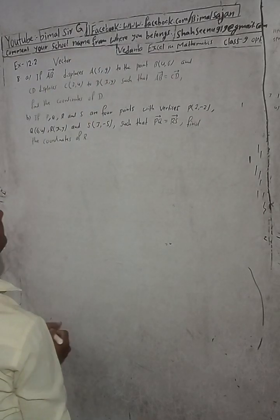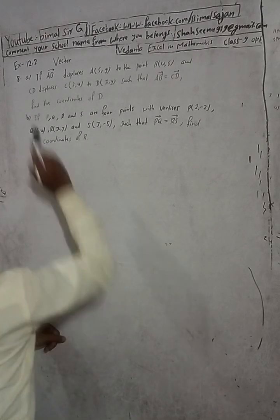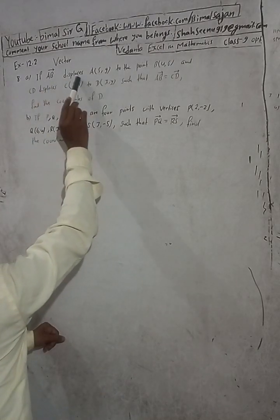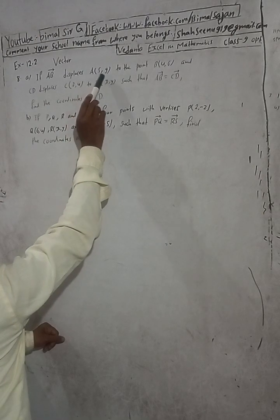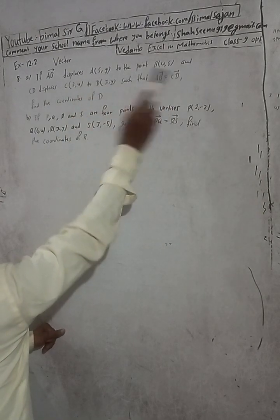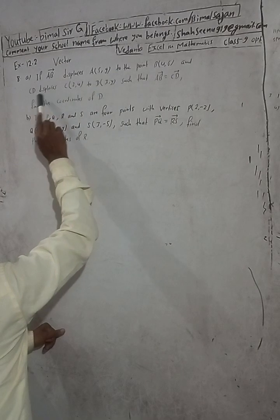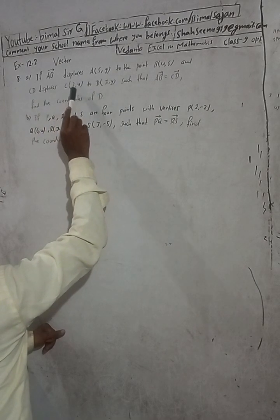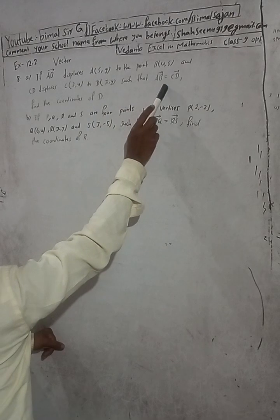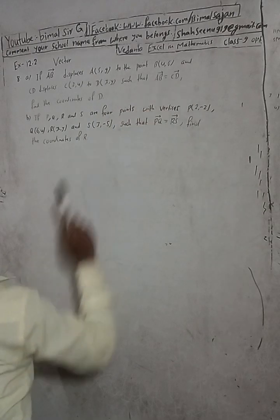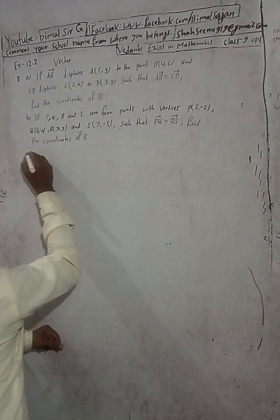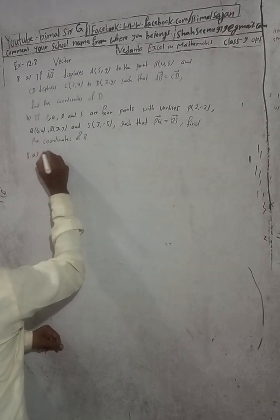Now the question is here: 8a. If any vector displaces A(5,9) to the point B(4,6), and CD displaces C(2,4) to D(x,y) such that AB vector is equal to CD vector, find the coordinate of D. 8a solution.